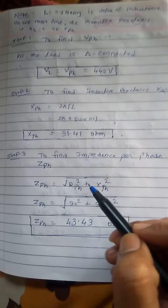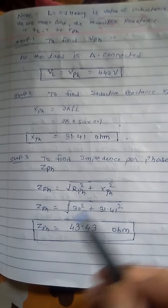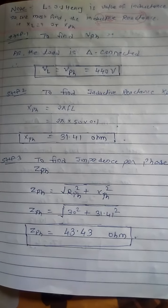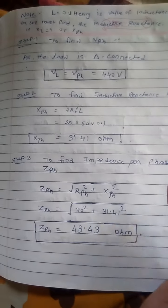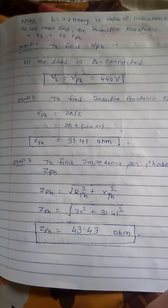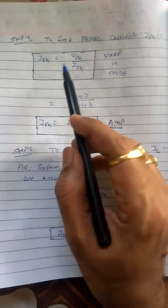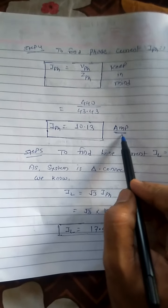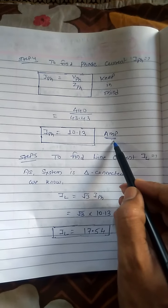Step 3 is to find impedance per phase ZPH. The formula is ZPH = √(RPH² + XPH²). Substituting values gives us ZPH. We calculate ZPH because we need to find the phase current IPH next. Step 4: IPH = VPH / ZPH. Since we have both VPH and ZPH, we can now find IPH.